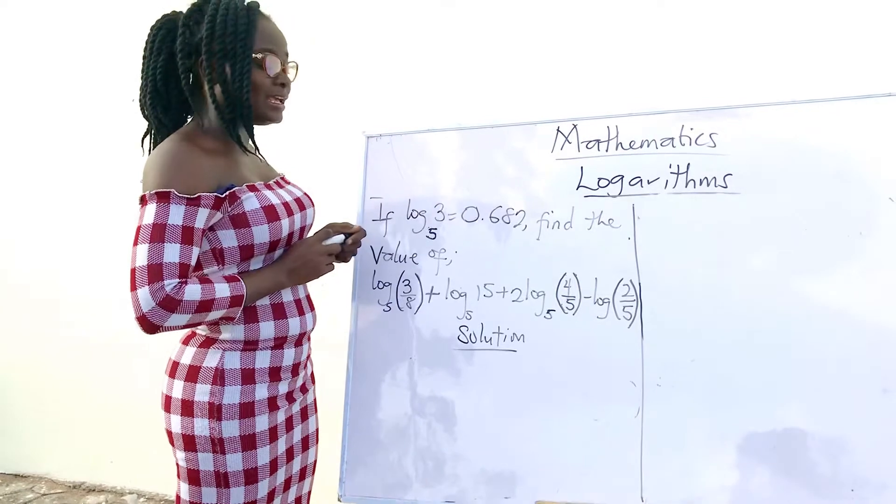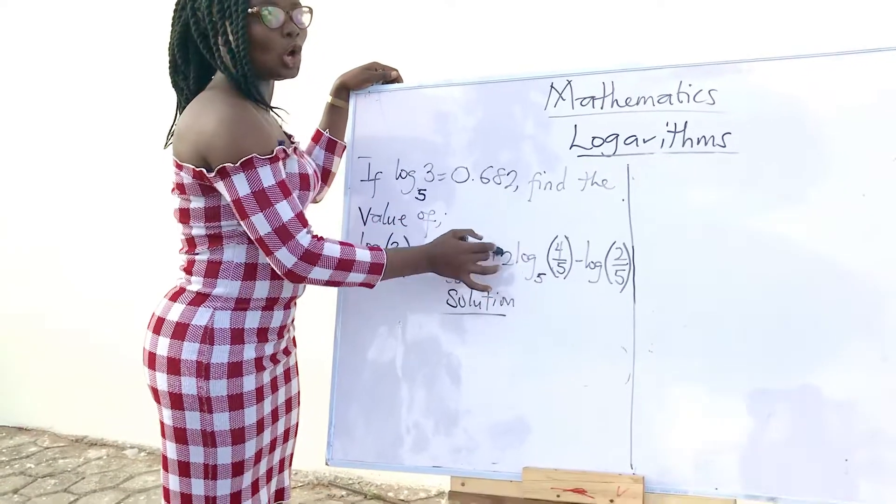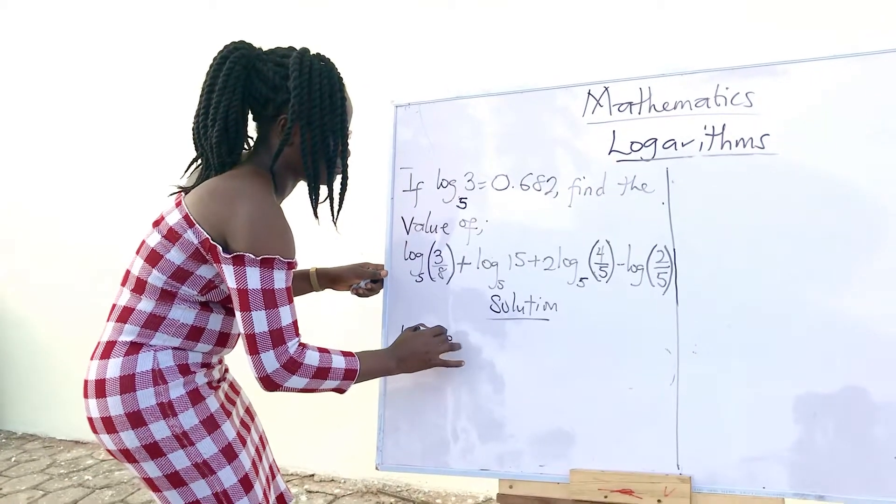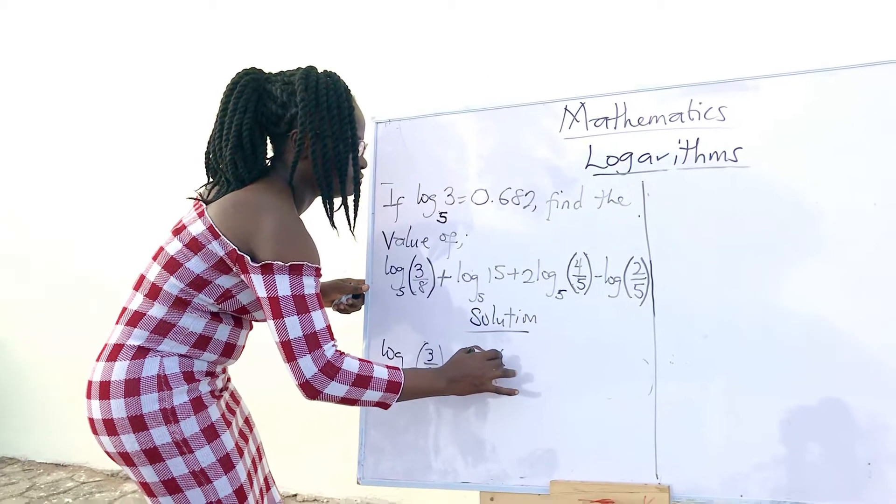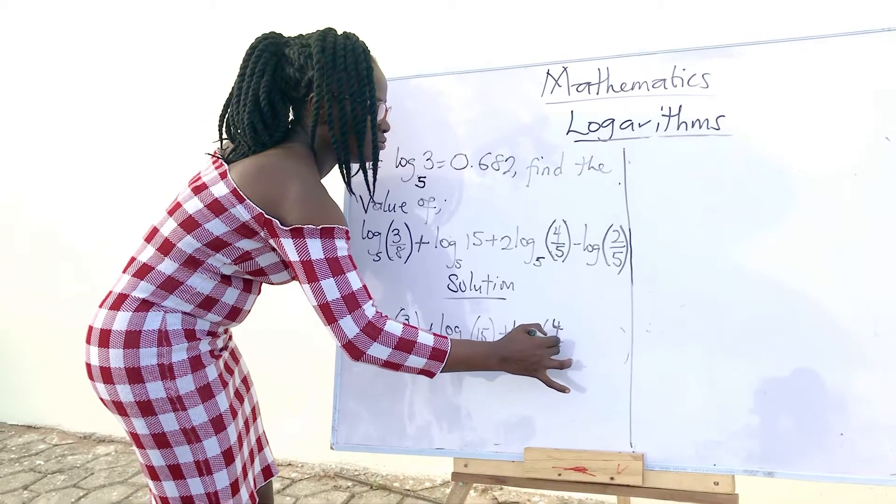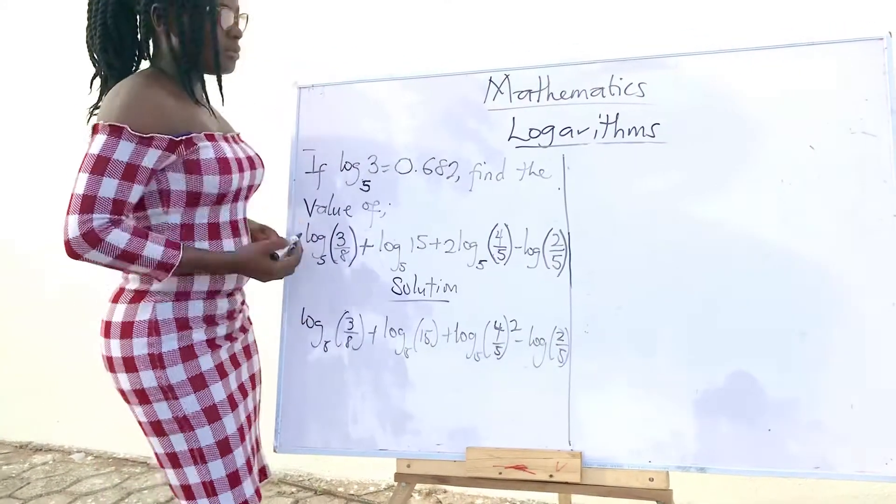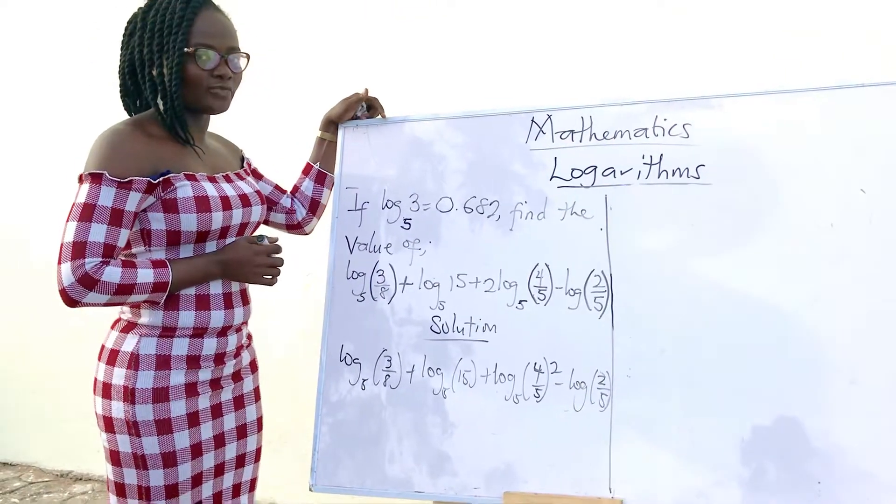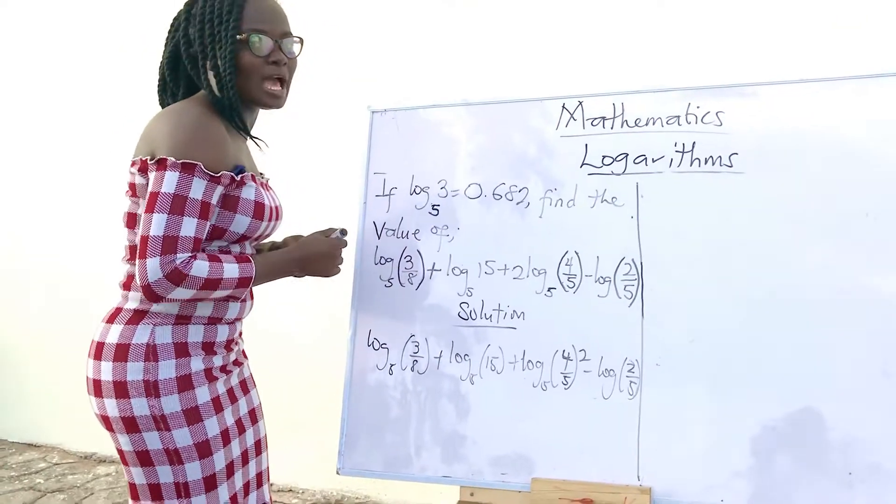We are going to apply the logs. The first law we are going to apply here is the third law. In this case, this 2 multiplying the log will come and raise the 4 over 5. When it gets in here, expand your brackets.